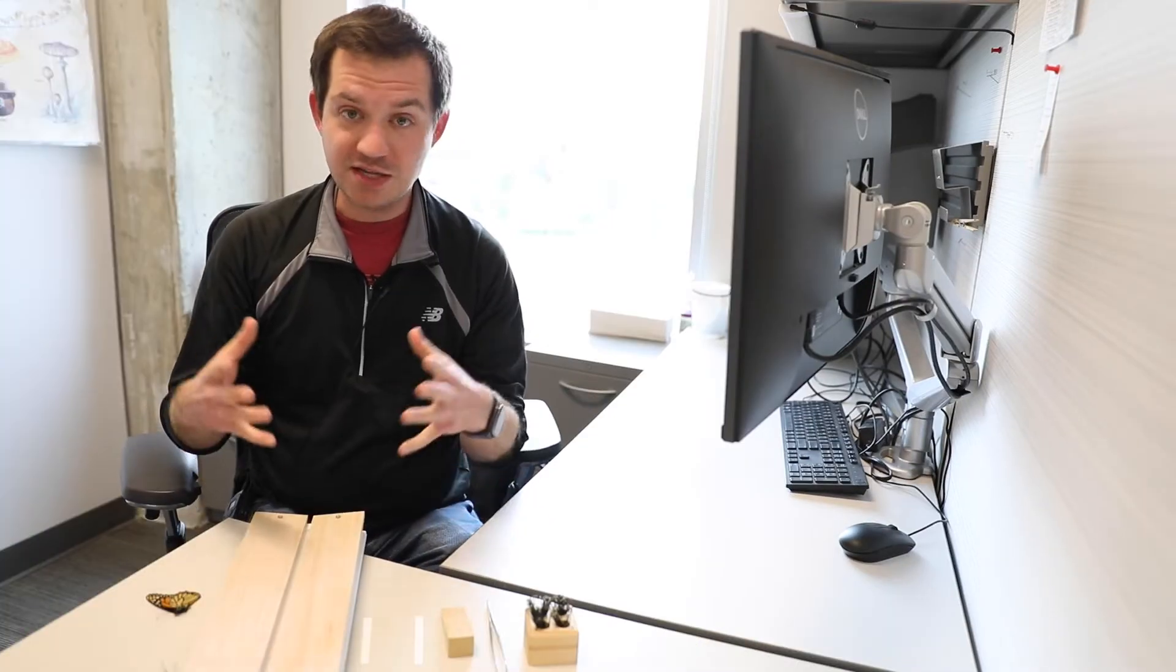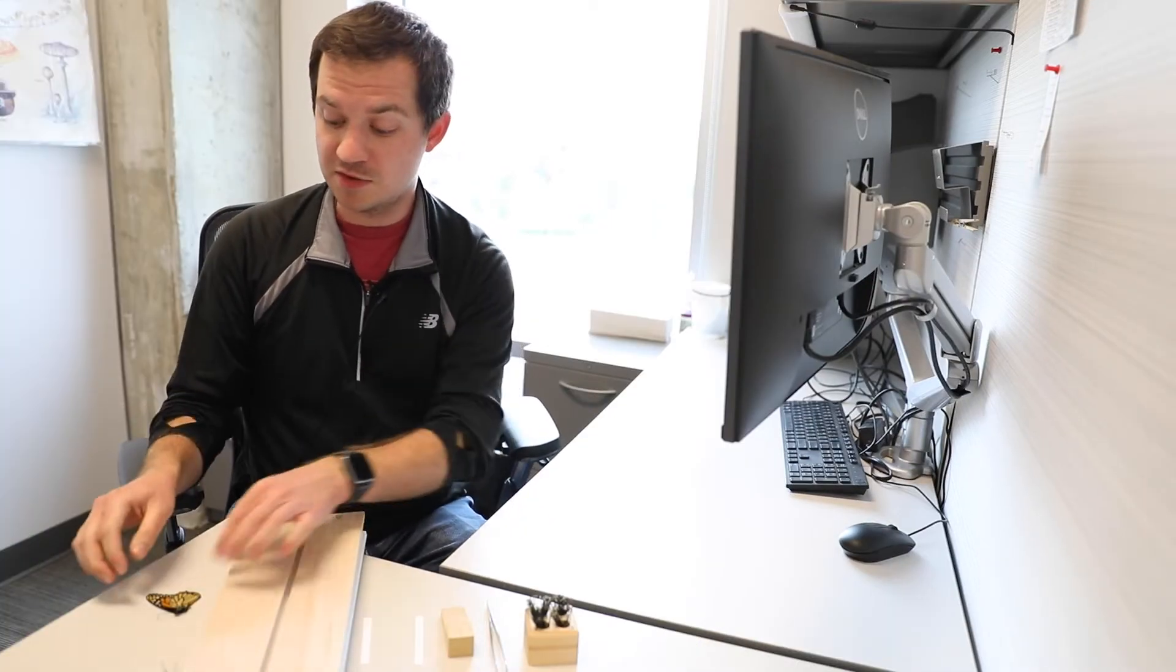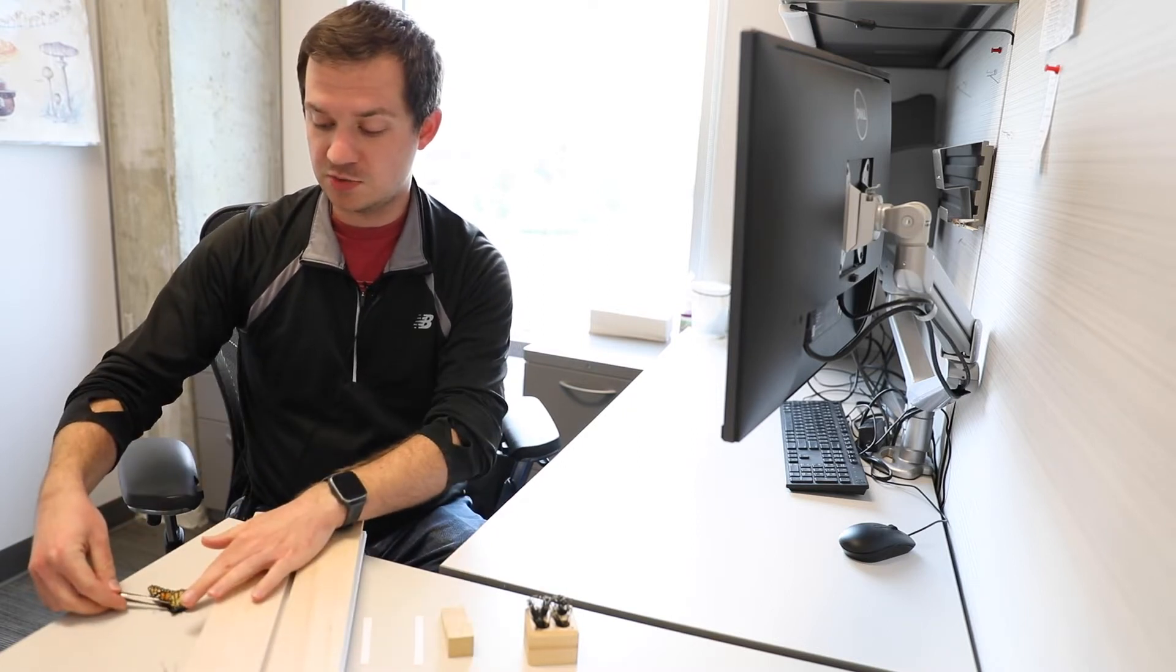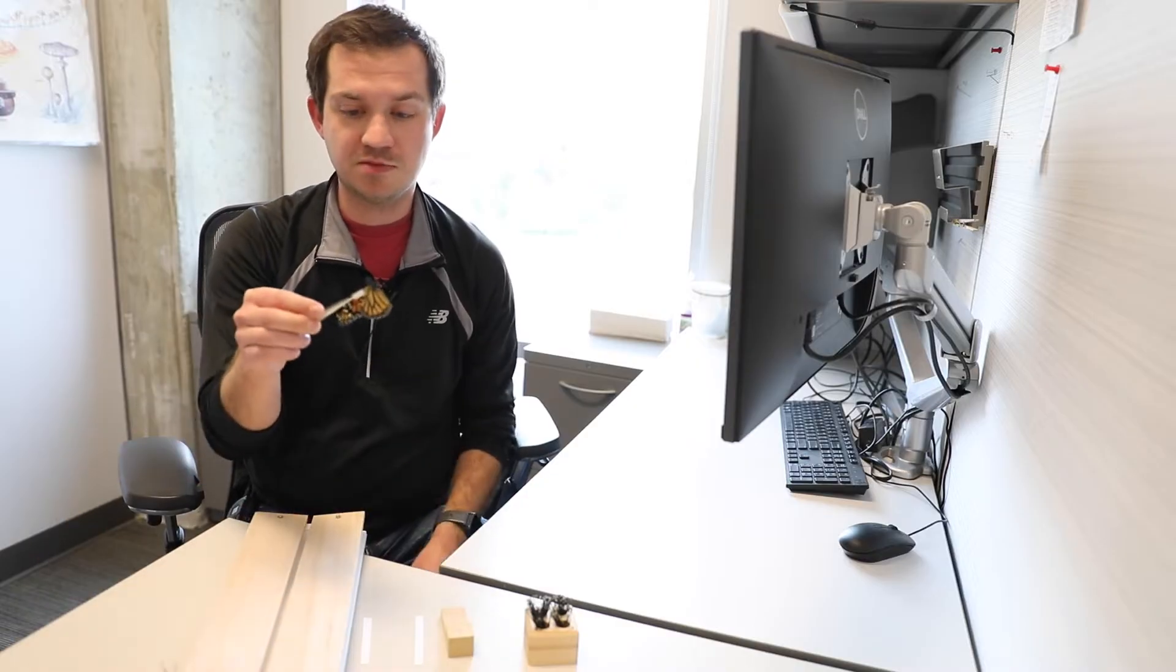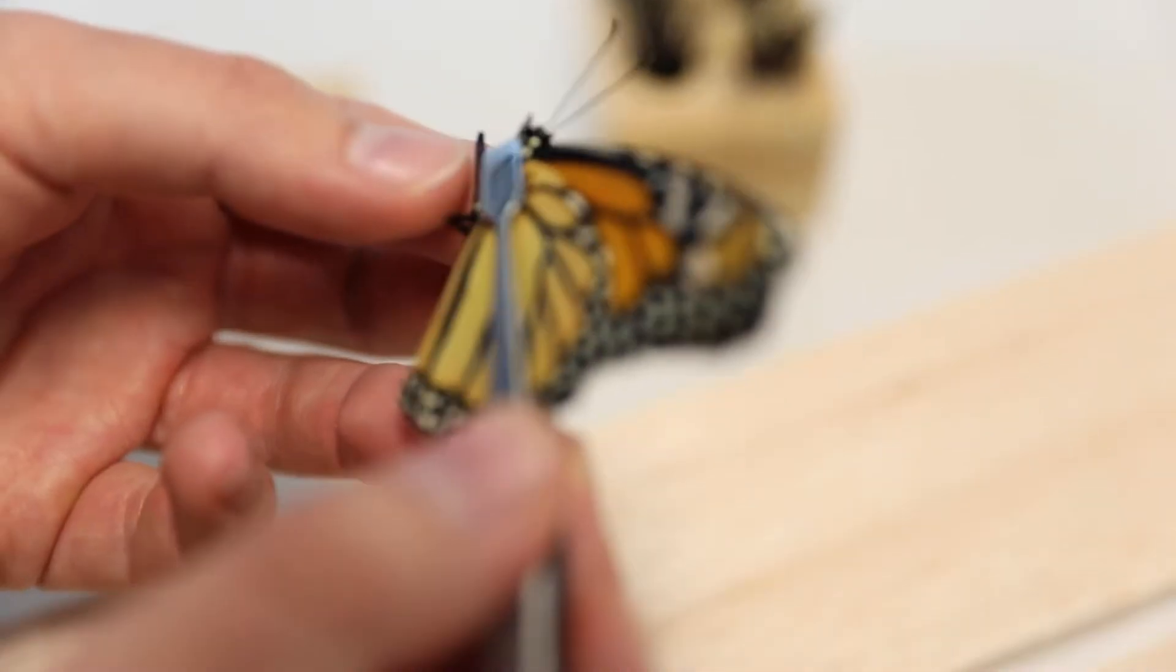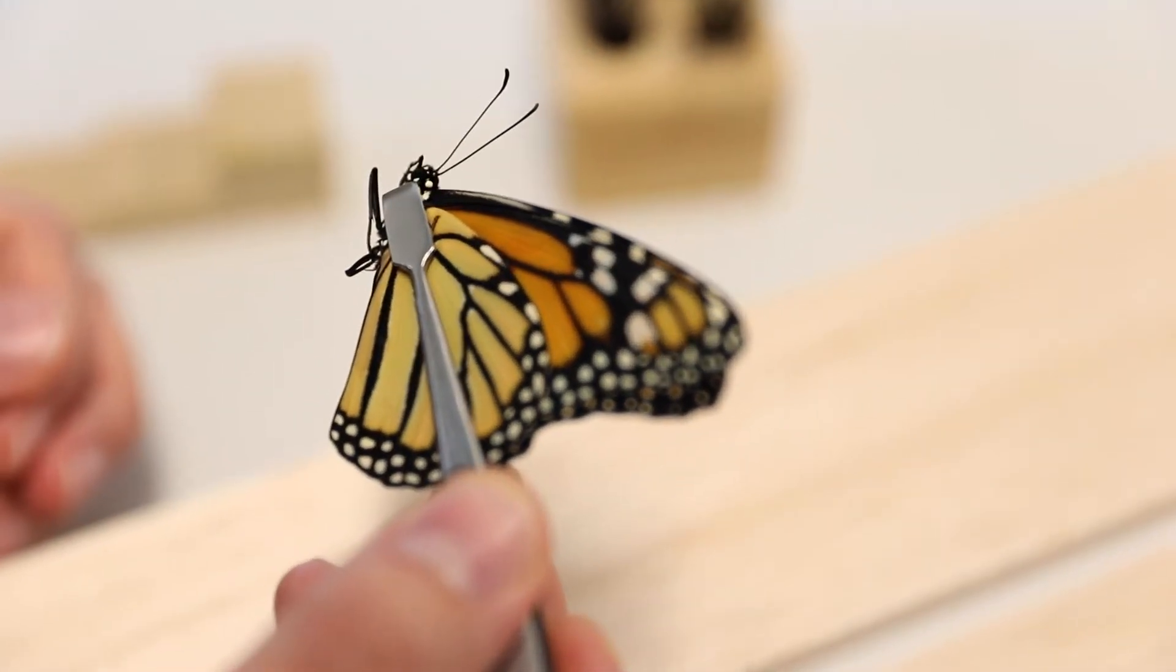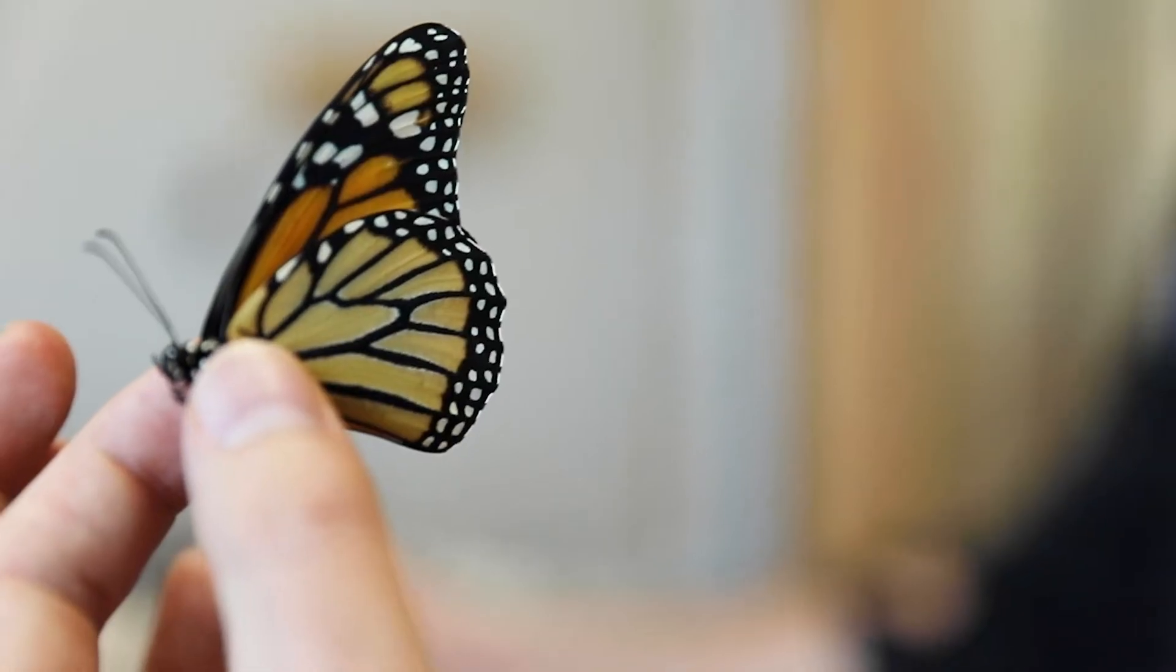That's all you really need for basic butterfly pinning and spreading. Some words to the wise: when you're picking up and manipulating a butterfly specimen, you either want to grip it by the front veins on the forewings - those are the thickest veins on the butterfly - so you're gonna limit the amount of damage you're potentially doing. If you're grabbing it with your hand, it's always just best to grip it by the body. You don't want to squeeze it, just gently grab the butterfly.